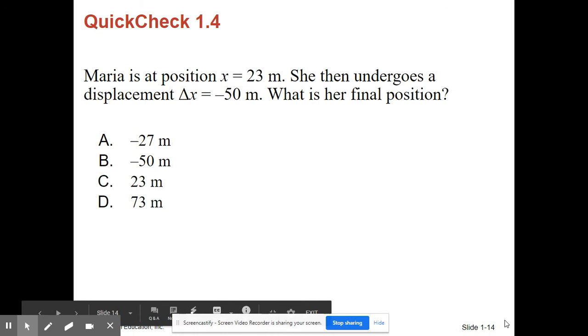All right, let's do a quick check. Maria is at a position x equals 23 meters. She then undergoes a displacement of negative 50 meters. What is her final position? So let's think about that coordinate system. All right, you have an answer. If you said negative 25 meters, you're correct.